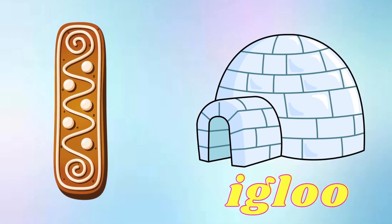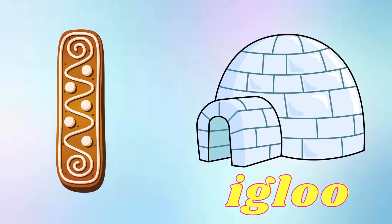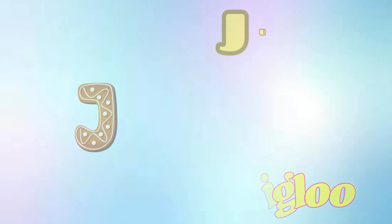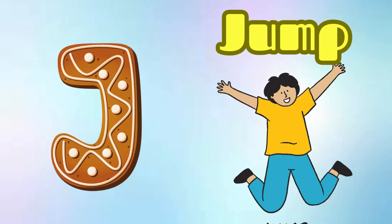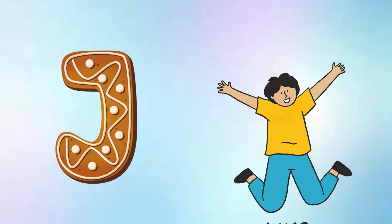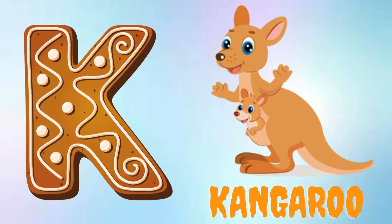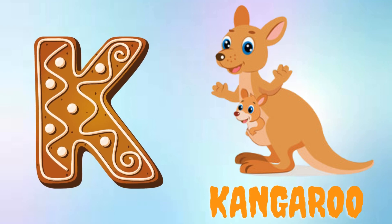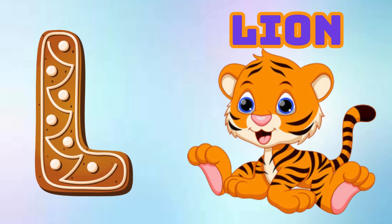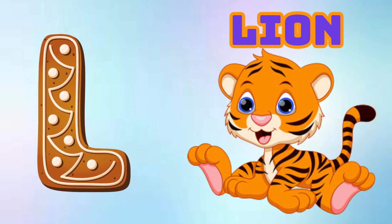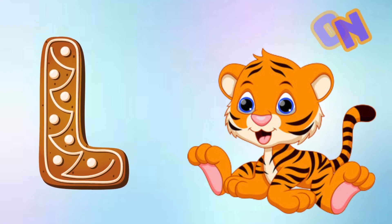I is for Igloo, I-I-Igloo. J is for Jump, J-J-Jump. K is for Kangaroo, K-K-Kangaroo. L is for Lion, L-L-Lion.